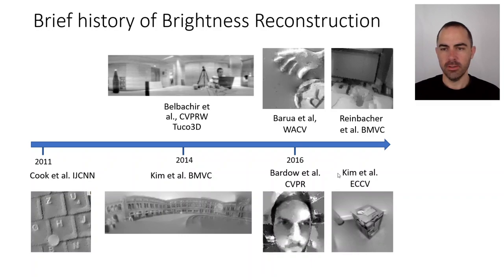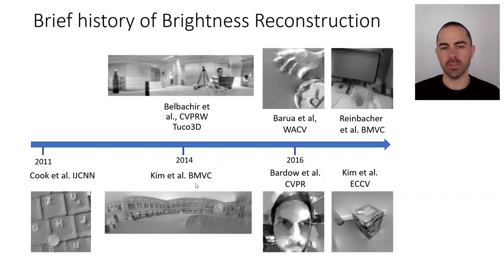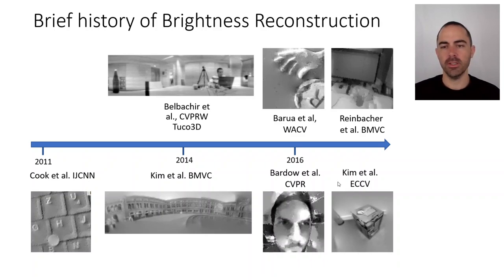Later that year at ECCV — the European Conference in Computer Vision — there was a paper generalizing the 2014 work by the same authors. Instead of three degrees of freedom SLAM, they were doing six degrees of freedom of the camera, and at the same time as estimating camera pose and depth of the scene, they also needed to estimate this grayscale value.